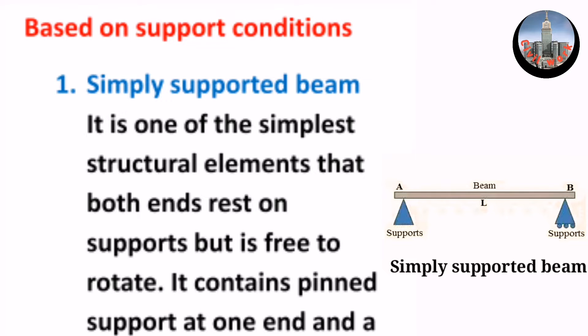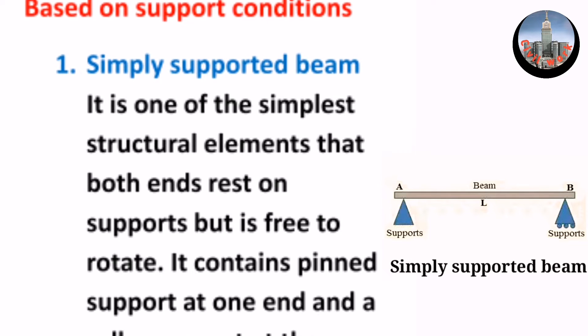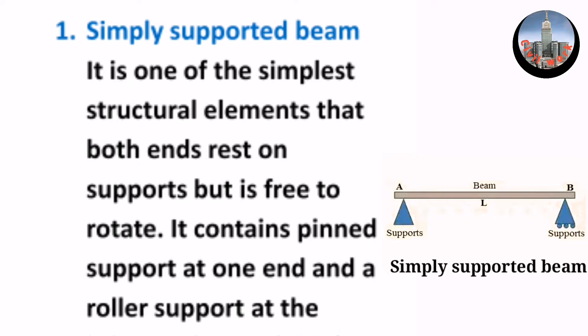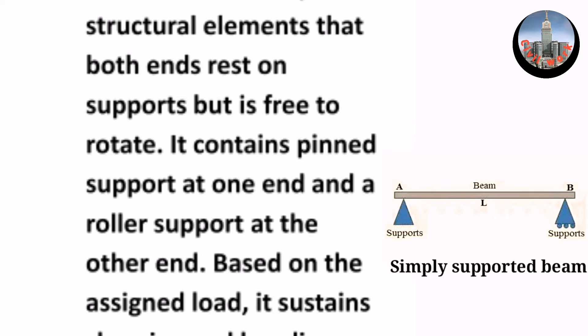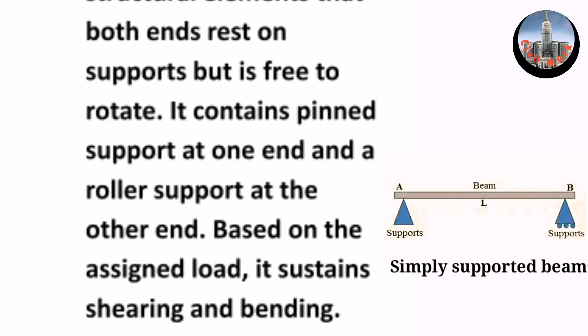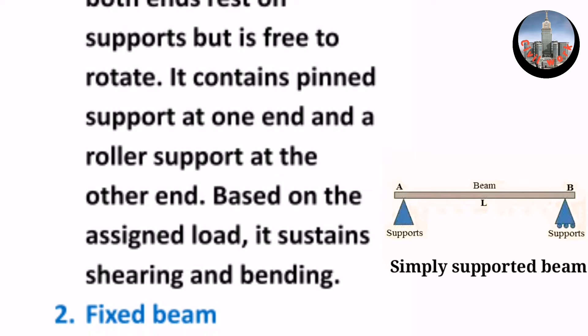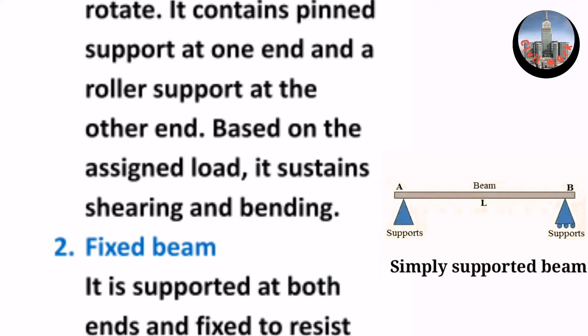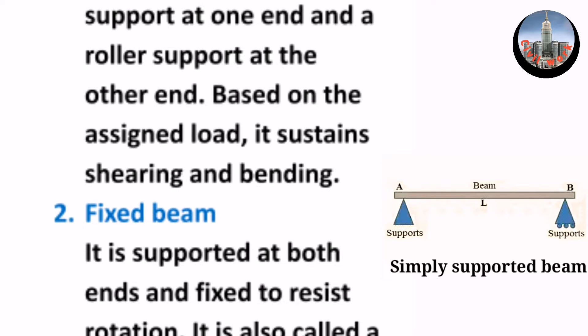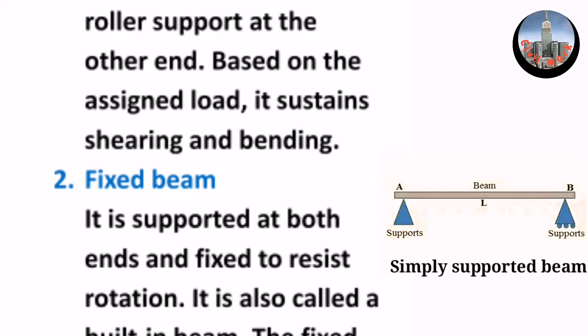Based on support conditions: 1. Simply supported beam. It is one of the simplest structure elements that both ends rest on supports but is free to rotate. It contains a pin support at one end and a roller support at the other end. Based on the assigned load, it sustains shearing and bending.